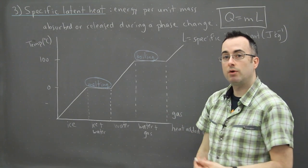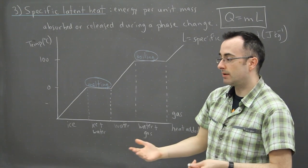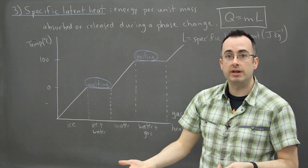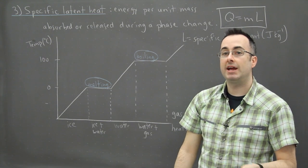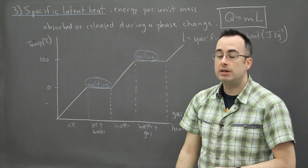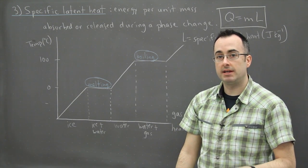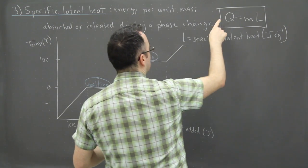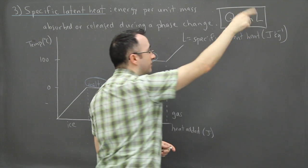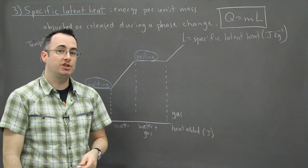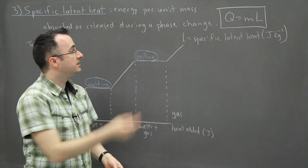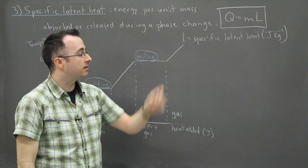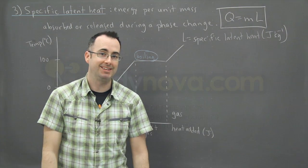So that means if you ever get a question or you're ever encountering a situation where you're having something change phase, you could deal with it just like you did with specific heat capacity except just add an extra term. Add an extra Q equals ML term whenever you've got some change in phase going on. So that's how you can deal with these things. So Q equals ML, that's specific latent heat.